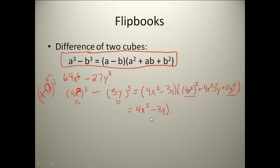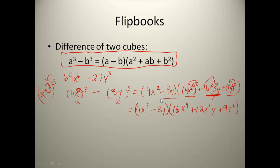I'm going to leave my front part (4x² - 3y) alone. Then (4x²)² — I've got to square both the 4 and the x², so it becomes 16x⁴. The middle term 4x² times 3y: I multiply 4 and 3 to get 12, and x² and y stay as x²y since they don't have the same base. And the last one, (3y)²: the 3 gets squared and the y gets squared, giving 9y². So my answer for that is (4x² - 3y)(16x⁴ + 12x²y + 9y²).